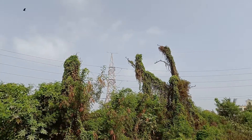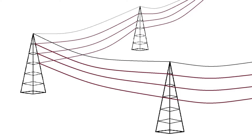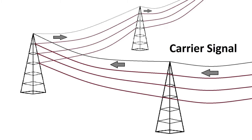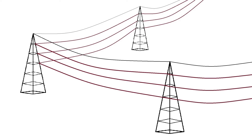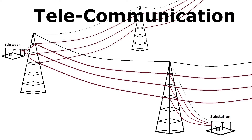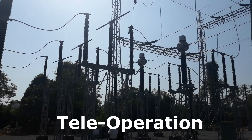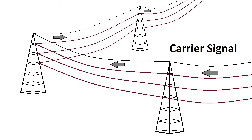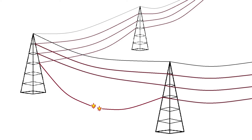We know that power transmission lines are used to transmit electric power. Using the same transmission lines, the carrier signal, which is a high frequency signal, is also transmitted. This carrier signal is used for telecommunication among electrical substations, telemonitoring, and teleoperation. Most importantly, the carrier signals are used to protect the power transmission line against faults.